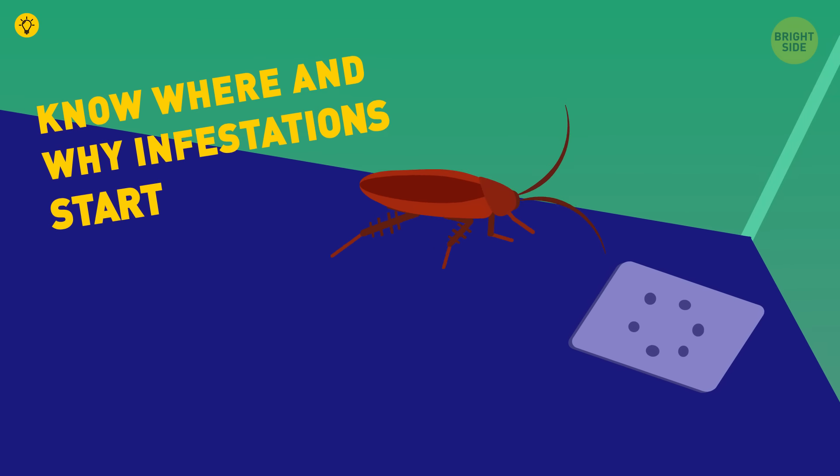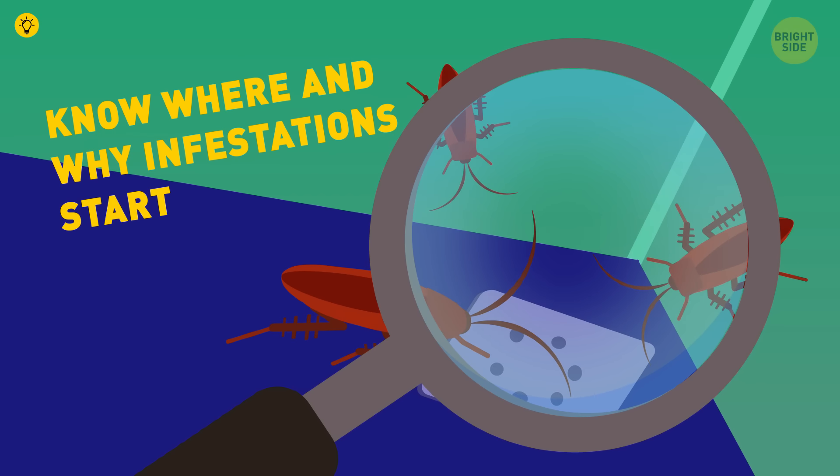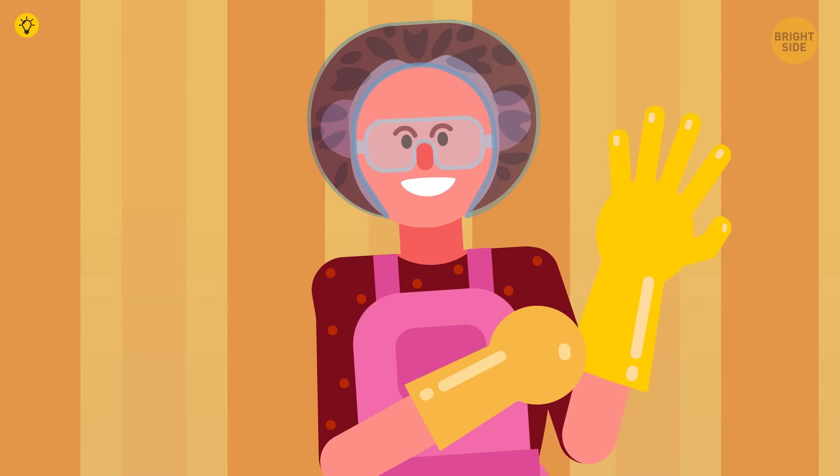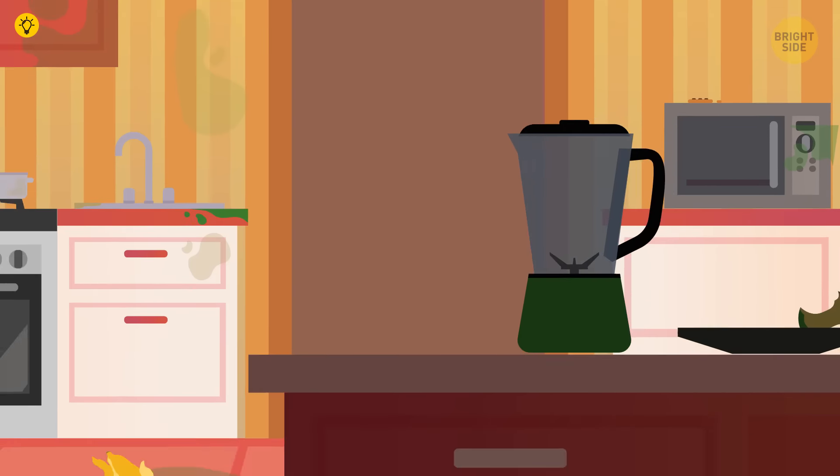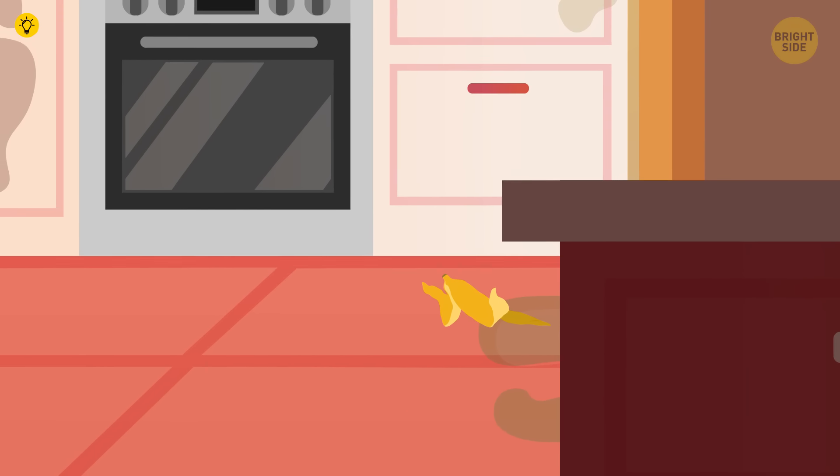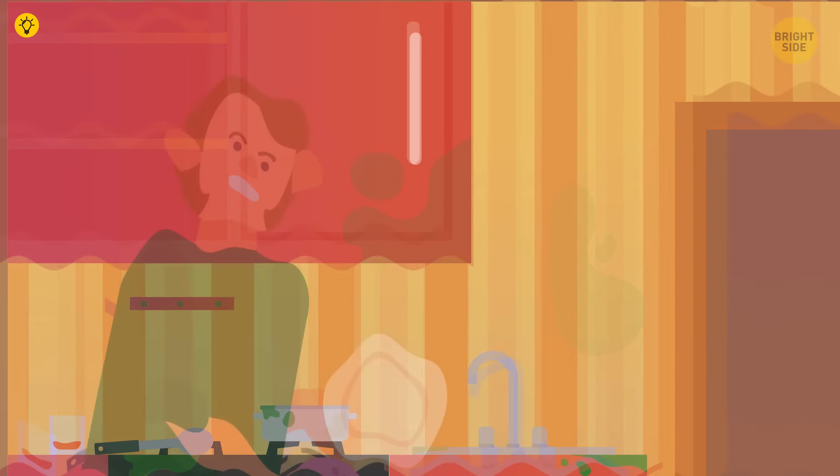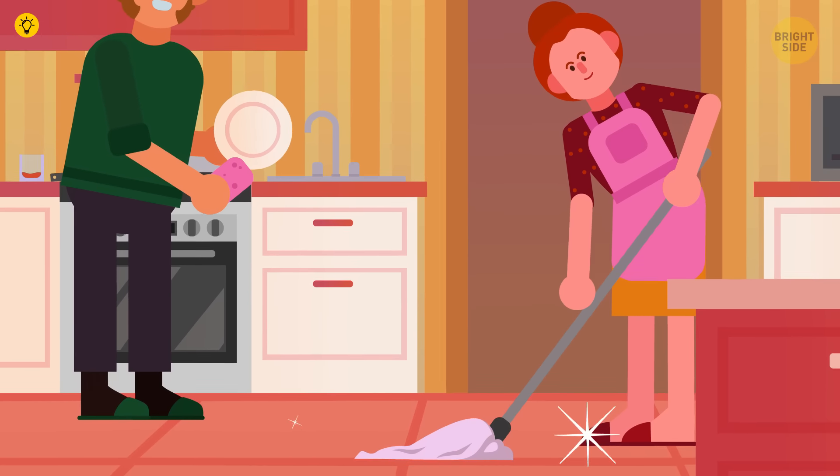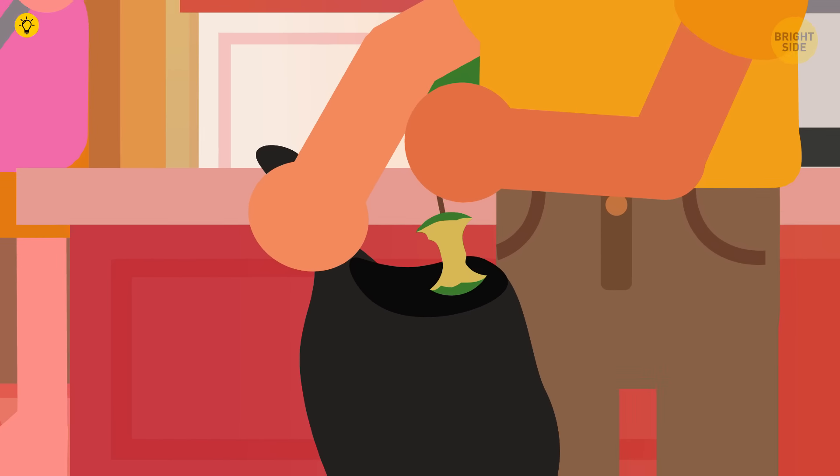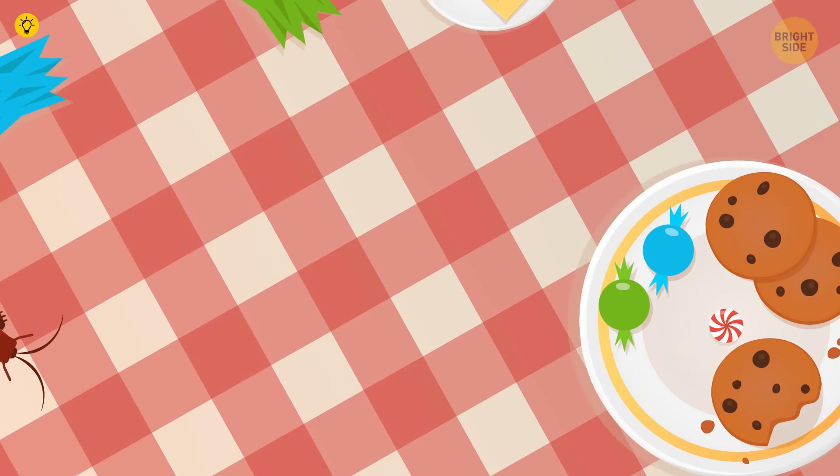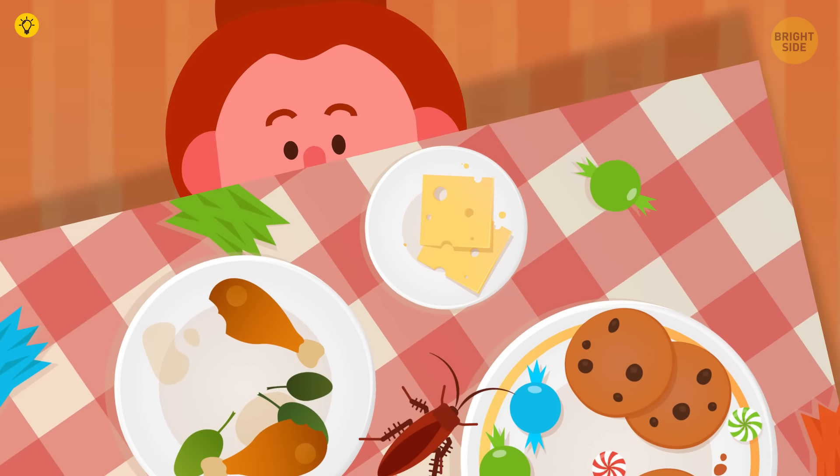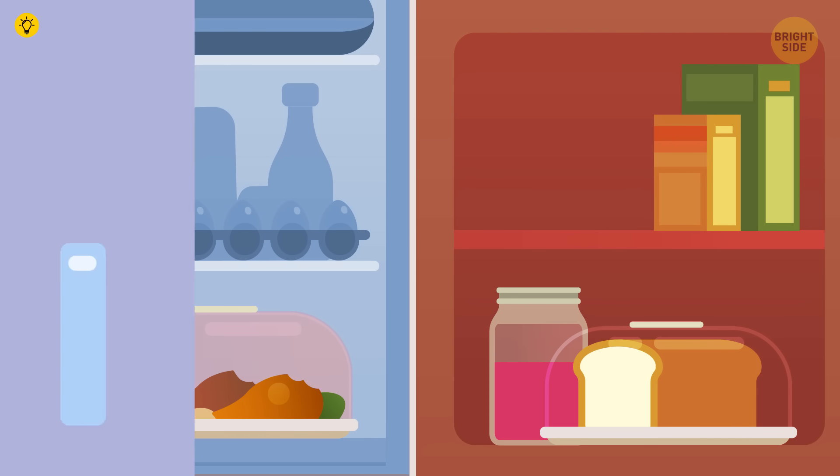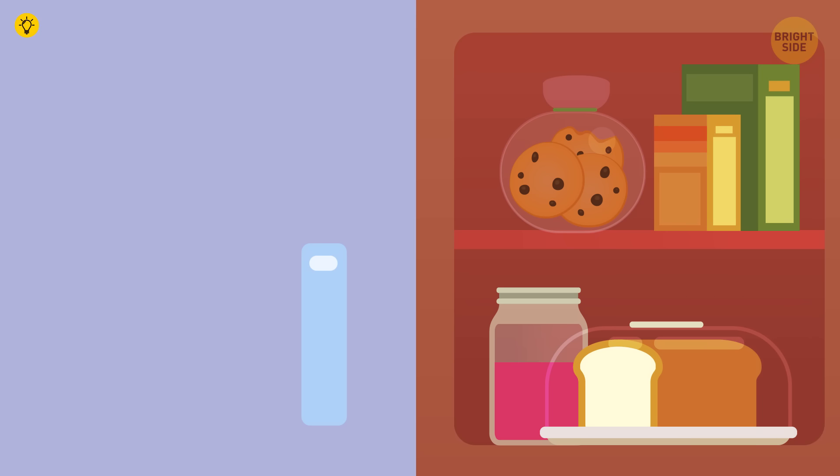Know where and why infestations start. Before you go on the offensive, you need to know where your target is. Infestations usually start in the kitchen, especially in those dark, hard-to-clean spaces behind and under cabinets and appliances. Make sure you keep your kitchen thoroughly cleaned before and after cooking and that no food is left out on the counters or spilled in the cabinets. Roaches are attracted to garbage, meat, cheese, sugary foods, and grease. Keep that stuff out of their reach, and they shouldn't show up in the first place.